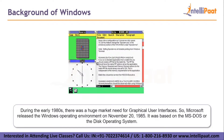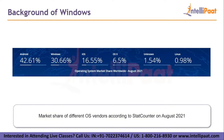Now let's take a look at the background of the Windows operating system. During the early 1980s, there was a huge market need for graphical user interfaces. So Microsoft released the Windows operating system on November 20th, 1985. It was based on MS-DOS, or the disk operating system. It later went on to take over 90% of the market share at its peak. Its biggest competition was Mac OS, which released its operating system in 1984 prior to Windows. This shows the market share of different OS vendors according to StatCounter as of August 2021.